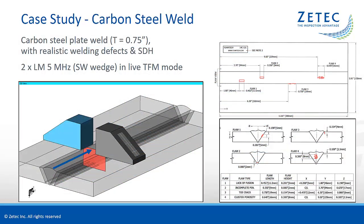The next case study will illustrate the flexibility and performance of TOPA64 and UltraVision Touch in using live TFM for weld inspection. For our trial, we have a carbon steel weld specimen with a wall thickness of 19 mm or ¾ of an inch. It contains typical manufacturing flaws: lack of fusion, incomplete penetration, a toe crack, and a cluster of porosity.